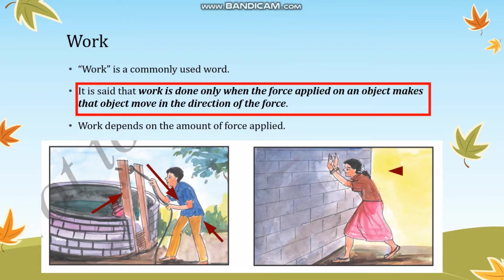Let us take the other situation where the girl is pushing the wall. She is trying to push the wall away from her, but the wall is not moving. In this situation, work is not said to be done on the wall. So work is done only when the force applied on an object makes that object move in the direction of the force. Also, work depends on the amount of force that is applied.